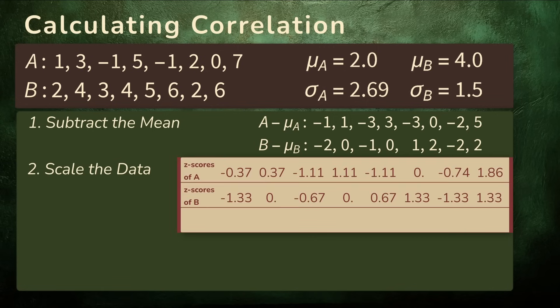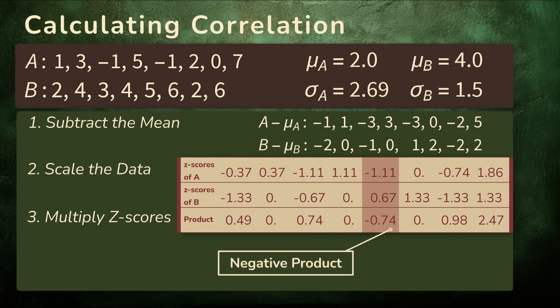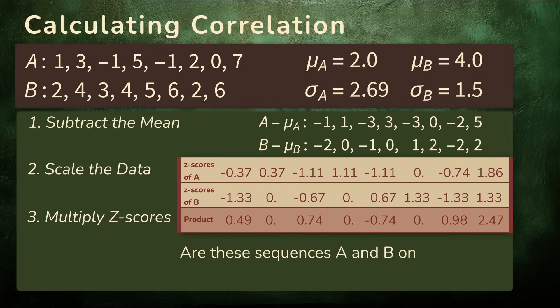Now we line up both sequences and multiply the corresponding z-scores. If both are above average, positive z-scores, the product is positive. If both are below average, negative z-scores, still positive. But if one is above and the other is below, the product is negative. This multiplication tells us are these sequences A and B on the same side of average at the same time, and if so, by how much.